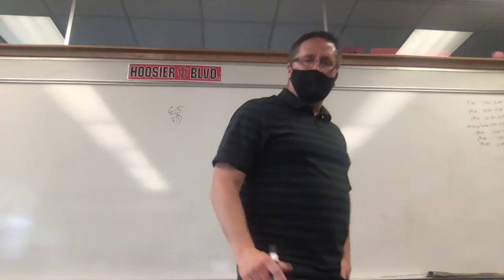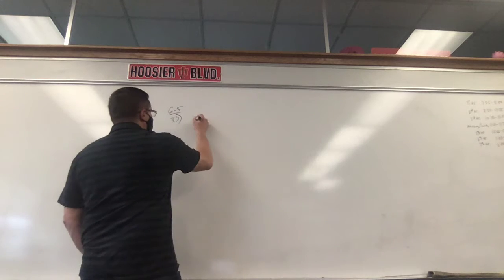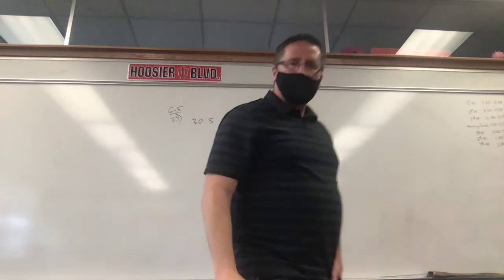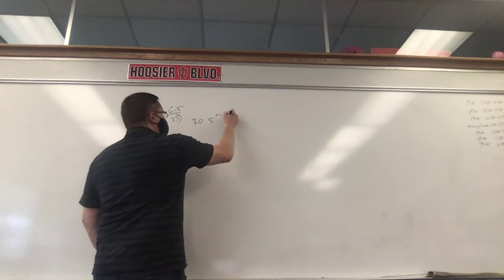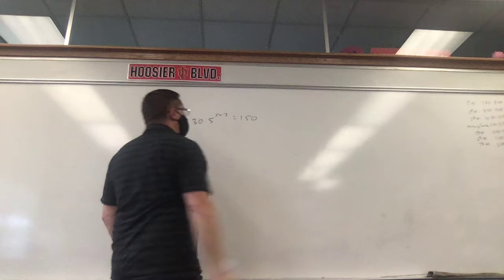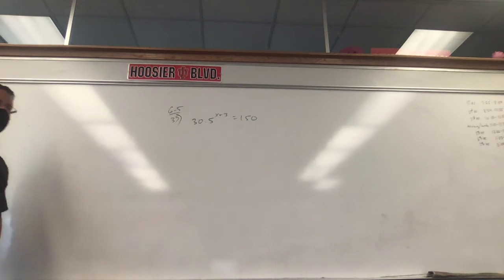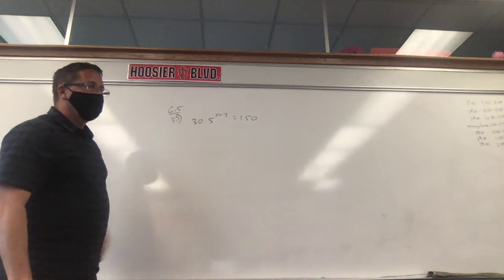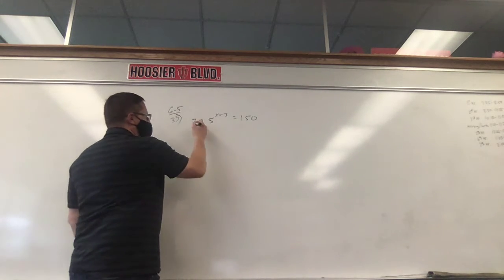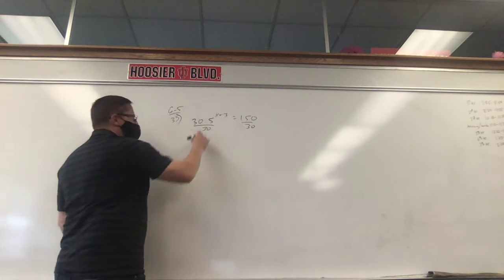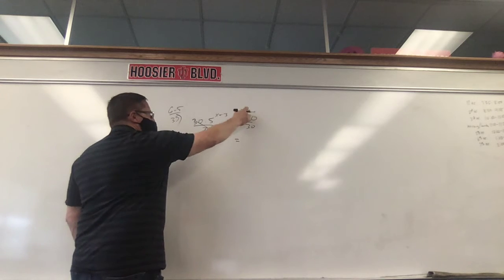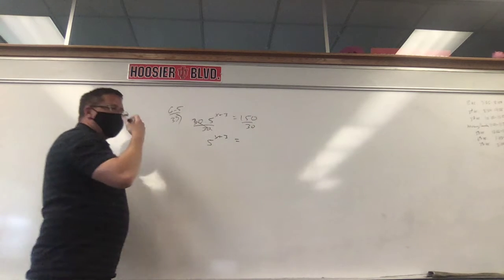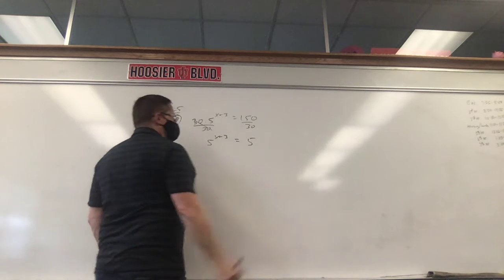So number 37, this one hopefully isn't that bad. We have to solve 30 times 5 to the what power? X plus 3 equals 150. Our first steps are real simple steps, a step you learned back in middle school, like 7th grade. You want to get X by itself. First thing you're going to get rid of is this 30. It says 30 times that, so we're going to divide by 30. The opposite of times 30 is dividing by 30. These 30s cancel. We have 5 to the X plus 3 equals—if you take 150 divided by 30, count by 30 to 150, you get 5.